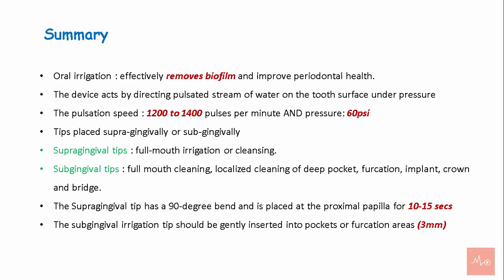To summarize: oral irrigation effectively removes biofilm and improves periodontal health. The device acts by directing a pulsated stream of water on the tooth surface under pressure, with a pulsation speed of 1200 to 1400 pulses per minute at 60 PSI. Tips can be placed supragingivally or subgingivally. Supragingival tips are used for full mouth irrigation; subgingival tips are used for localized cleaning of deep pockets, furcation, implants, and crown and bridge. The supragingival tip has a 90-degree bend and is placed at the proximal papilla for 10 to 15 seconds, while the subgingival tip should be gently inserted into pockets or furcation areas up to 3 mm.